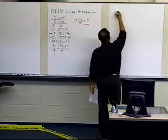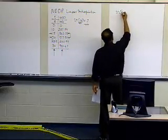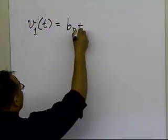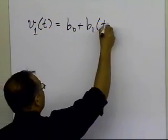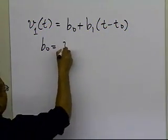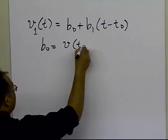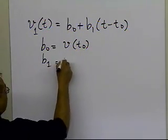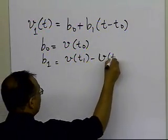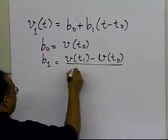The velocity V₁(t), the first-order polynomial, is given by the formula: V₁(t) = b₀ + b₁(t - t₀), where b₀ is the value at the first data point and b₁ is the slope between t₀ and t₁.